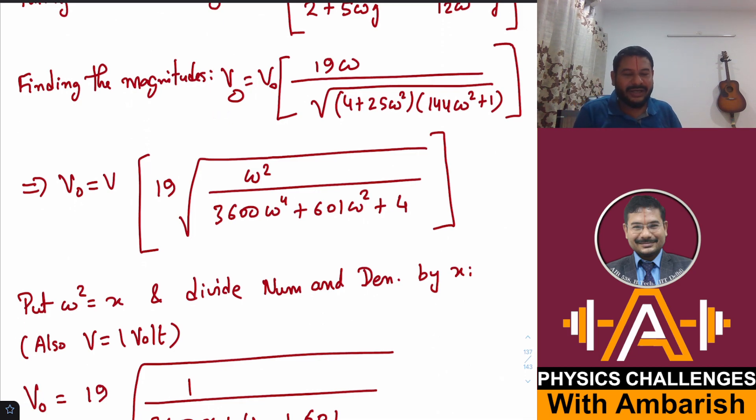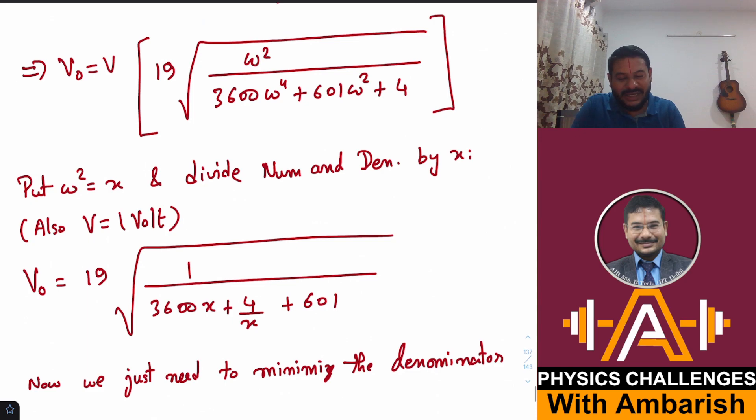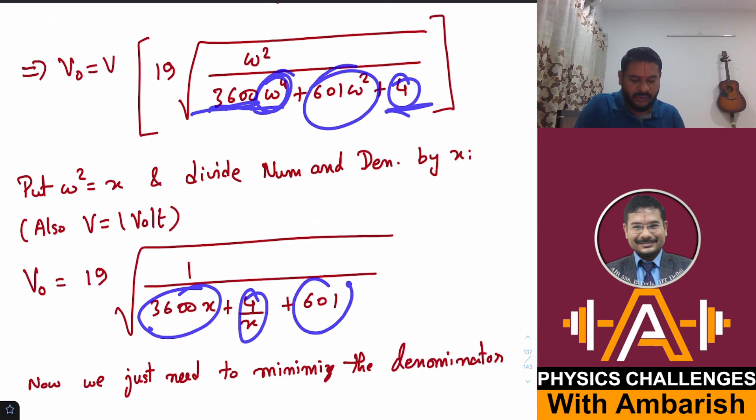You just need to differentiate it with respect to ω and this looks cumbersome. So you put ω² = X and divide the numerator and denominator by ω². Then you have a simpler expression in ω². If you divide by ω², this becomes 3600ω², which is 3600X. This becomes 4/ω², which is 4/X, and this becomes 601.